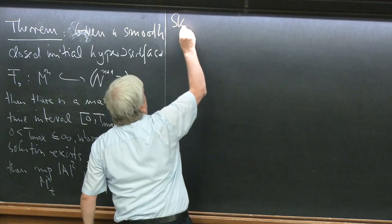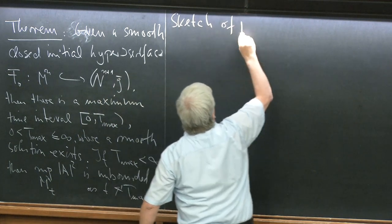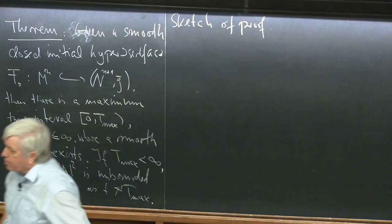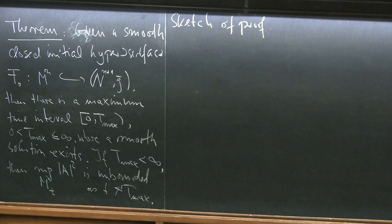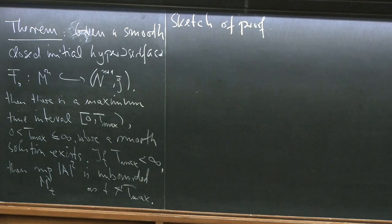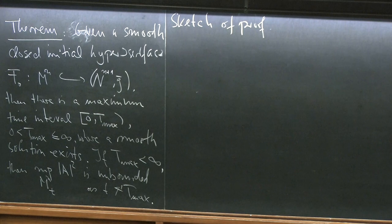Sketch of proof. Question from audience: Is the initial hypersurface supposed to be embedded or immersed? Both is possible. But if it starts out embedded, can it become immersed before it blows up? No, but that's a different proof. You can prove that something embedded remains embedded. For this existence proof, the surfaces can be immersed, and as part of the proof, I show that an immersion stays an immersion.